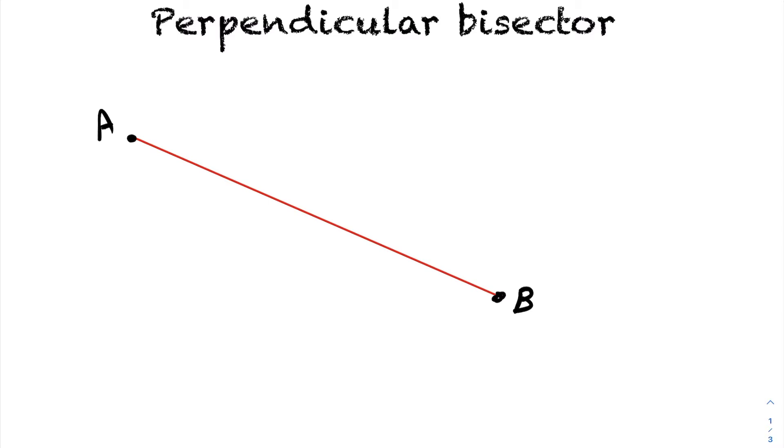Well, let me draw what the perpendicular bisector is. It is a line that crosses line segment AB at 90 degrees. And not only does it cross at 90 degrees, but it crosses it at the midpoint. This is the perpendicular bisector of line segment AB.